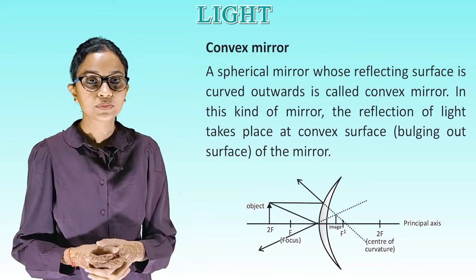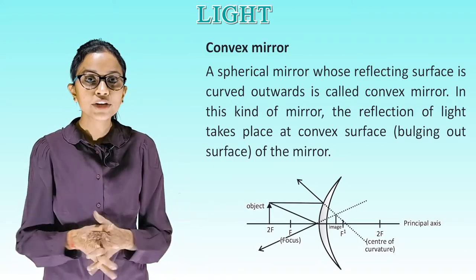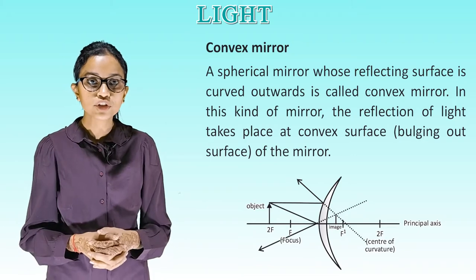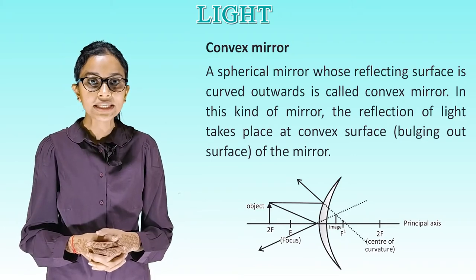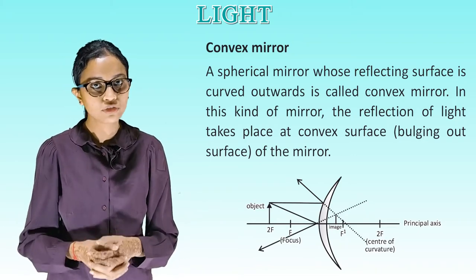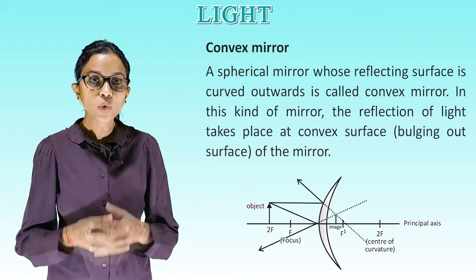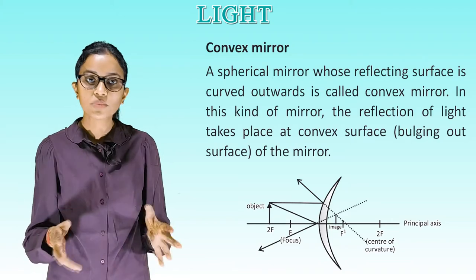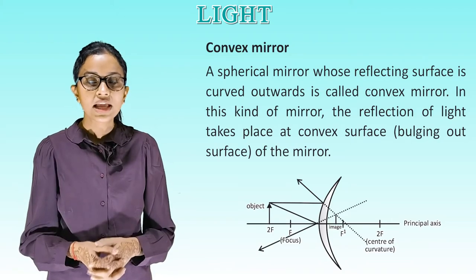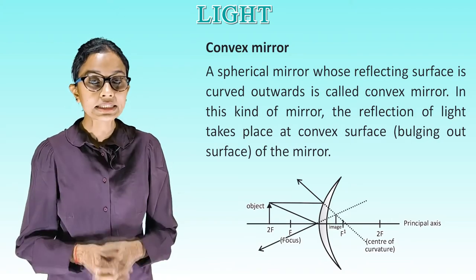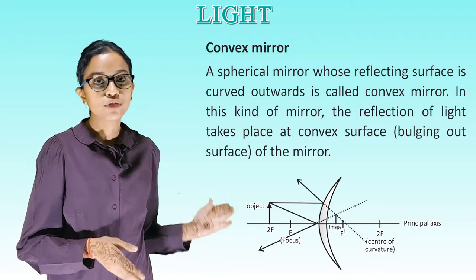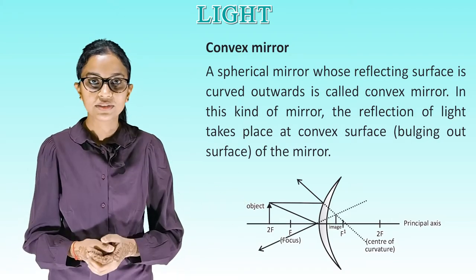Convex mirror: in this kind of mirror, the reflection of light takes place at the convex — bulging-out — surface of the mirror. This is the diagram of a convex mirror.